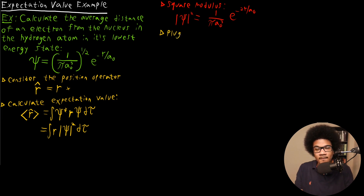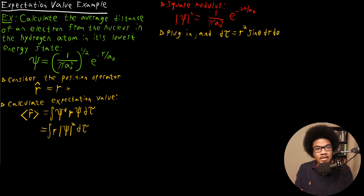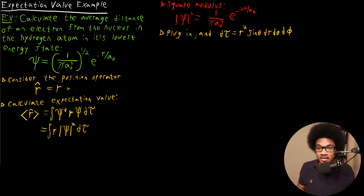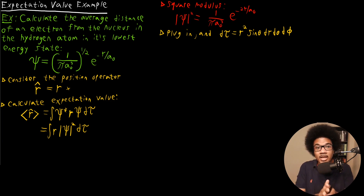Now I plug this back into the integrand and consider the differential volume element. Since we're in spherical polar coordinates, that differential volume element d-tau is R-squared sine-theta dr d-theta d-phi. We have to integrate over all space — even though this wave function has no angular component, it's still required that we integrate over all available R, theta, and phi.